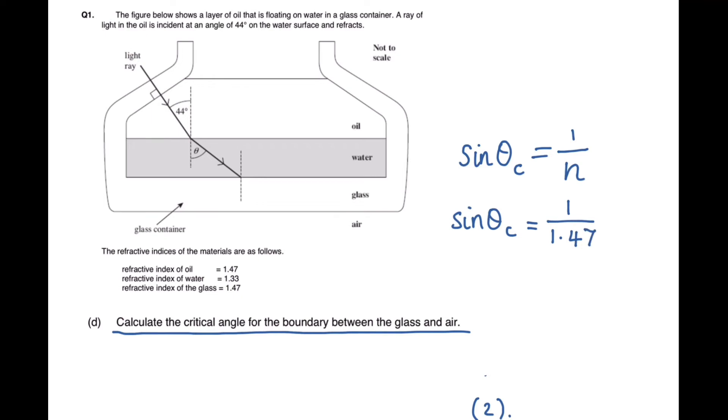Again to find phi c without the sine you need to do sine to the minus 1 of 1 over 1.47 and you will get out an answer of 42.86. We're going to round that to 43 degrees because in the question the smallest number of significant figures they work to is 2. So we will also follow that.